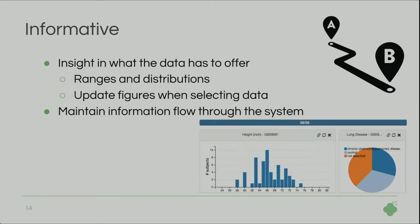The second principle is informative: give insight into what the data has to offer. We do this by showing ranges and distributions — for numerical data you get histograms, and for categoricals you get pie charts. The figures are linked, so if you select one range in the histogram, the distributions in the pie chart will update, and vice versa. We also want to maintain the information flow through the system, improving on what the current Transmart UI offers.